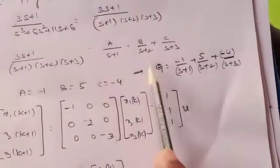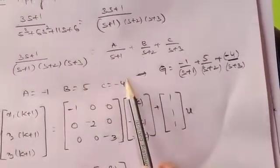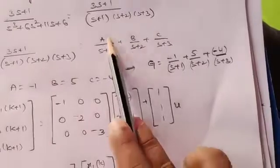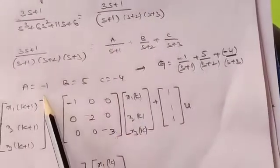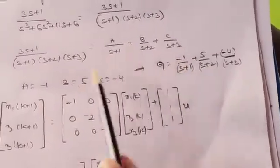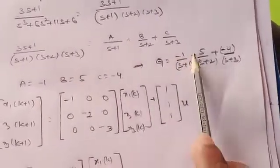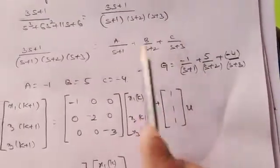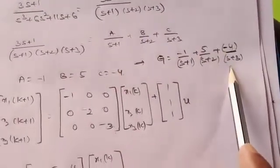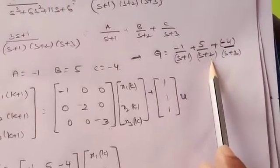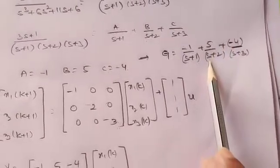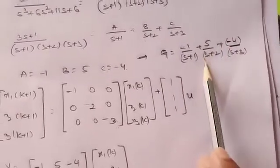Now let us substitute all the values of A, B, and C into the above equation. G(s) = −1/(s+1) + 5/(s+2) + (−4)/(s+3). After substituting in the above equation, we now have to find out the resultant state model.